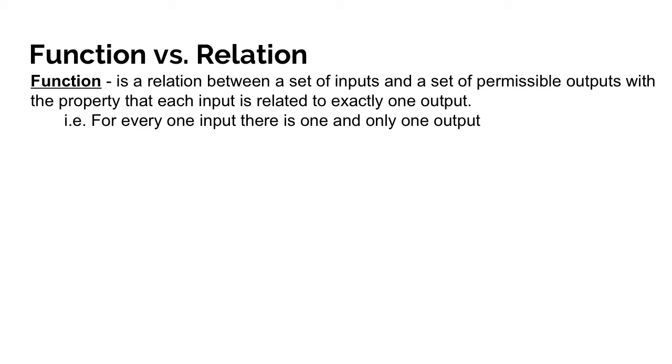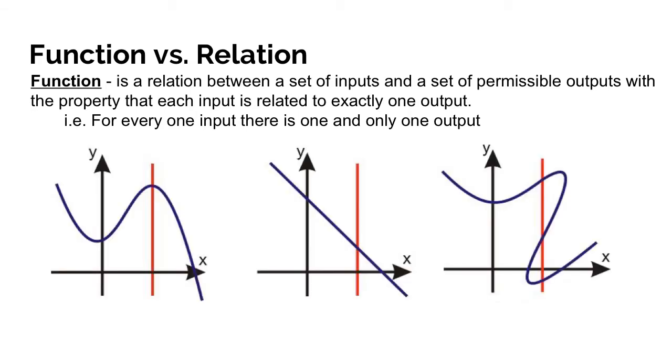So let's take a look at some graphs to understand what is or is not a function. Here we have three different graphs, all with a red line placed through them. Now the red line isn't a part of the graph, but it does help us visualize whether there is one input for every one output. And what we call that vertical line that you pass through each of these graphs is the vertical line test.